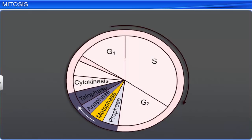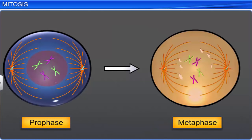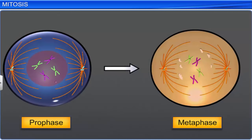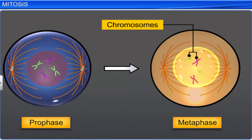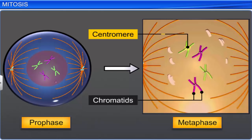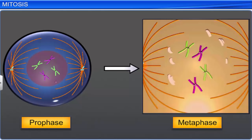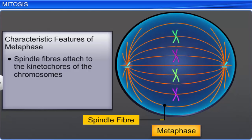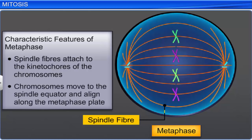Prophase is followed by the metaphase, the onset of which is marked by the disintegration of the nuclear membrane, resulting in the scattering of the chromosomes in the cytoplasm. During this stage, the chromosomes can be clearly seen and studied under the microscope, as their condensation is complete. Moreover, each chromosome is made up of two sister chromatids bound together by a centromere. Each centromere has a small disc-shaped structure on its surface called the kinetochore. Spindle fibers attach to the kinetochores of the chromosomes, and the chromosomes move towards the spindle equator. The plane of alignment of the chromosomes during this phase is known as the metaphase plate.